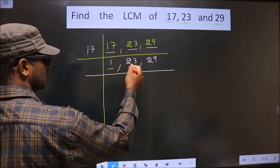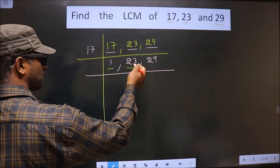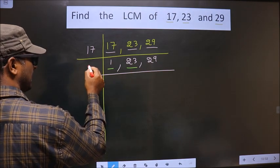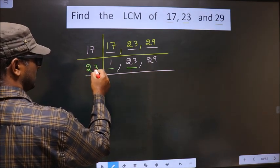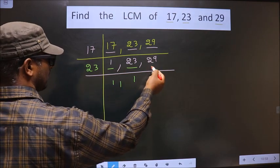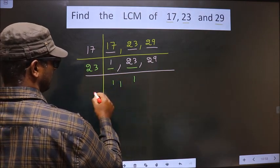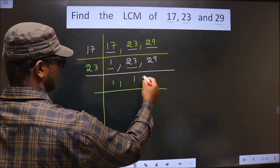So you focus on the next number, that is 23. 23 also a prime number, so we take here 23 once. 23, 29 is not divisible by 23, so as it is you write it down.